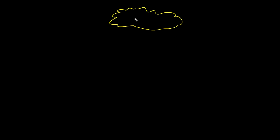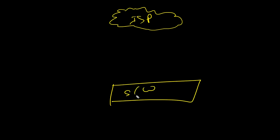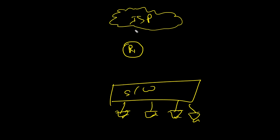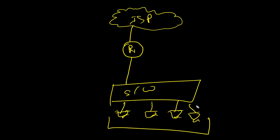Let me design the network. This is my ISP and here is my network — this is my switch and here is my user. This user wants to communicate with an outside user. I will connect R1 between the ISP and my network, connecting my LAN to the internet by router R1. So R1 will be the default gateway for all these users.